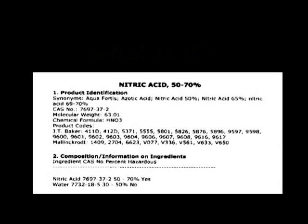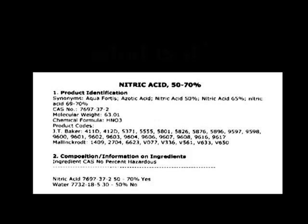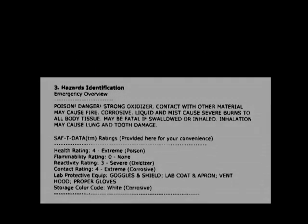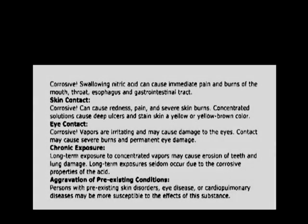The first two sections of an MSDS identify the product by name, and if it's a mixture, identify all the components. Section 3 identifies exactly what the hazards are — whether it's flammable, poison, dangerous, or whatever. Potential health effects are always indicated, including if we inhale it, ingest it, or get it on our skin.